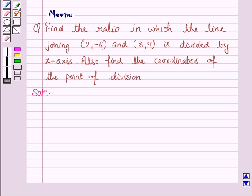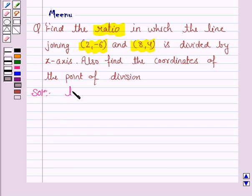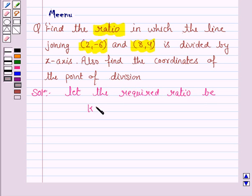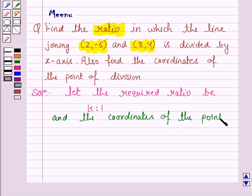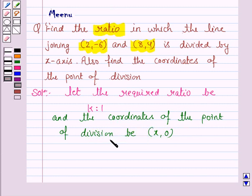We have to find the ratio in which the line joining the points (2, -6) and (8, 4) is divided by the x-axis. So let the required ratio be k : 1, and the coordinates of the point of division be (x, 0). We have taken the y-coordinate as 0 because the point of division lies on the x-axis.